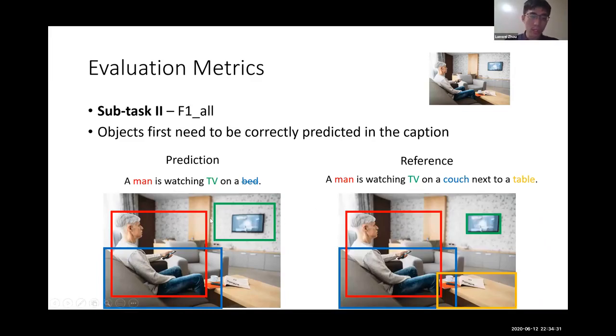The red bounding box prediction overlaps with the reference, so that's correct. For the green bounding box on TV, the bounding box is not tight enough, so that's an incorrect prediction.